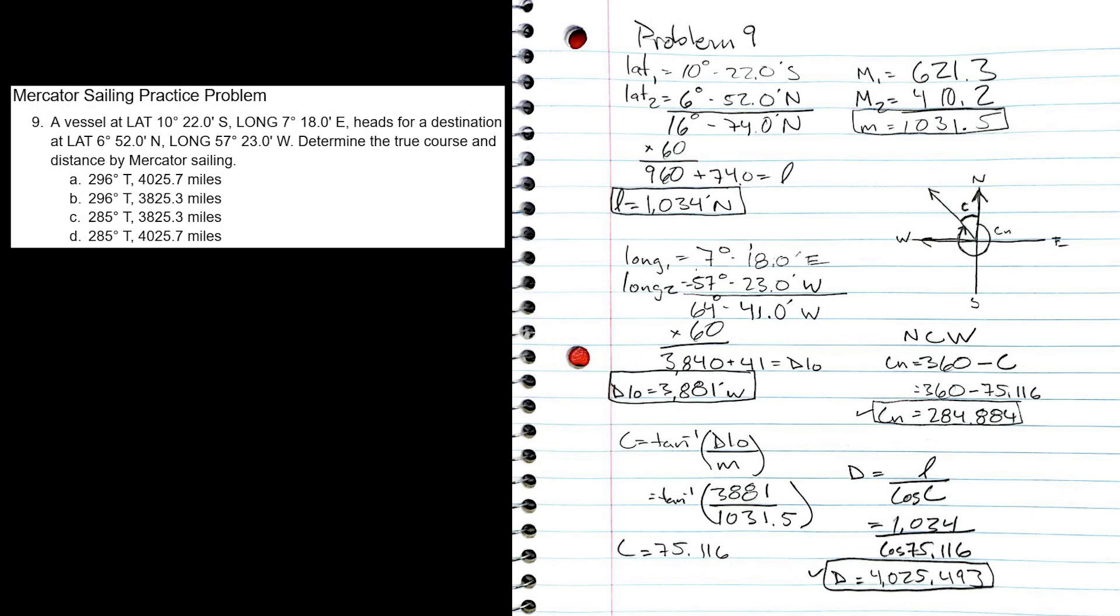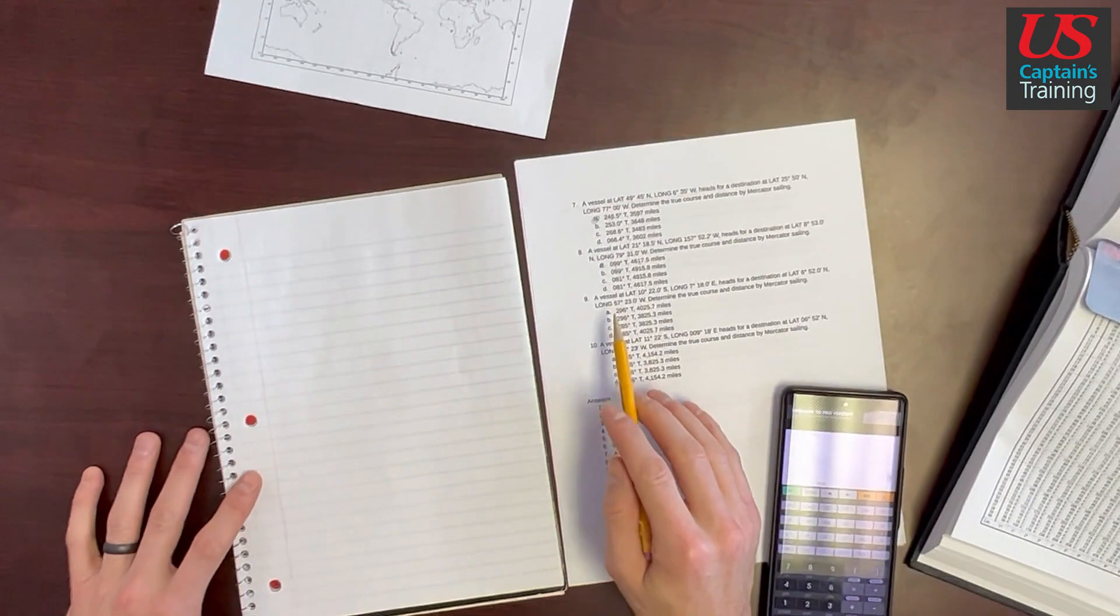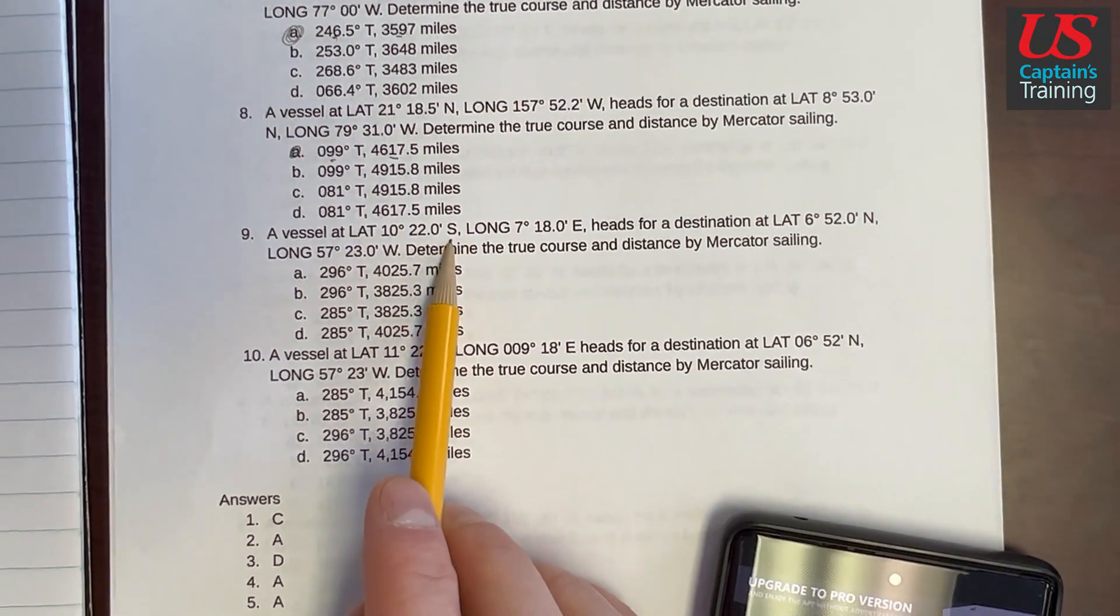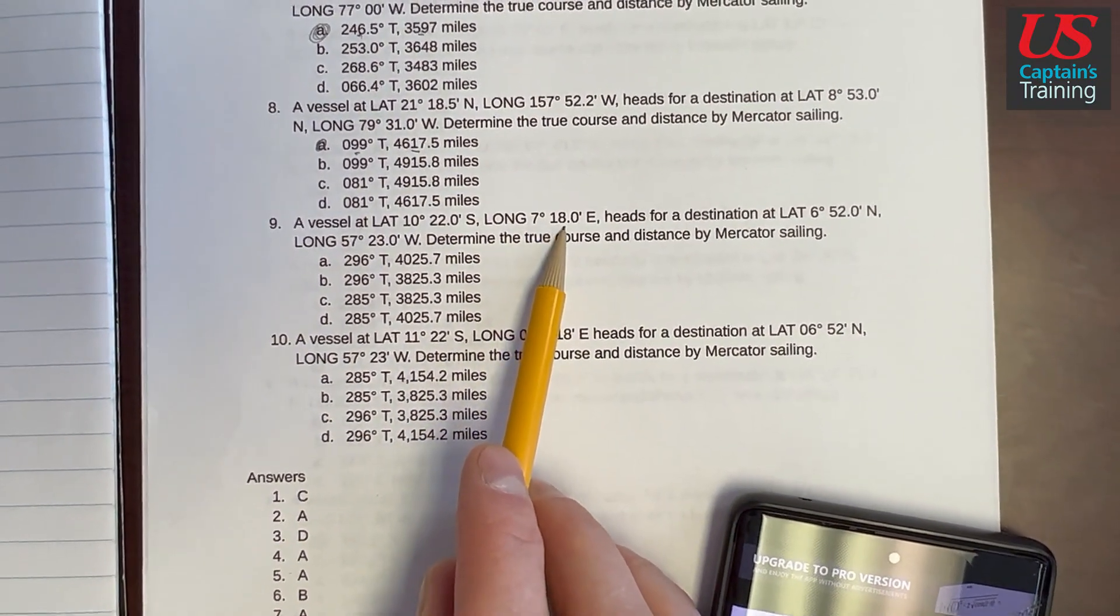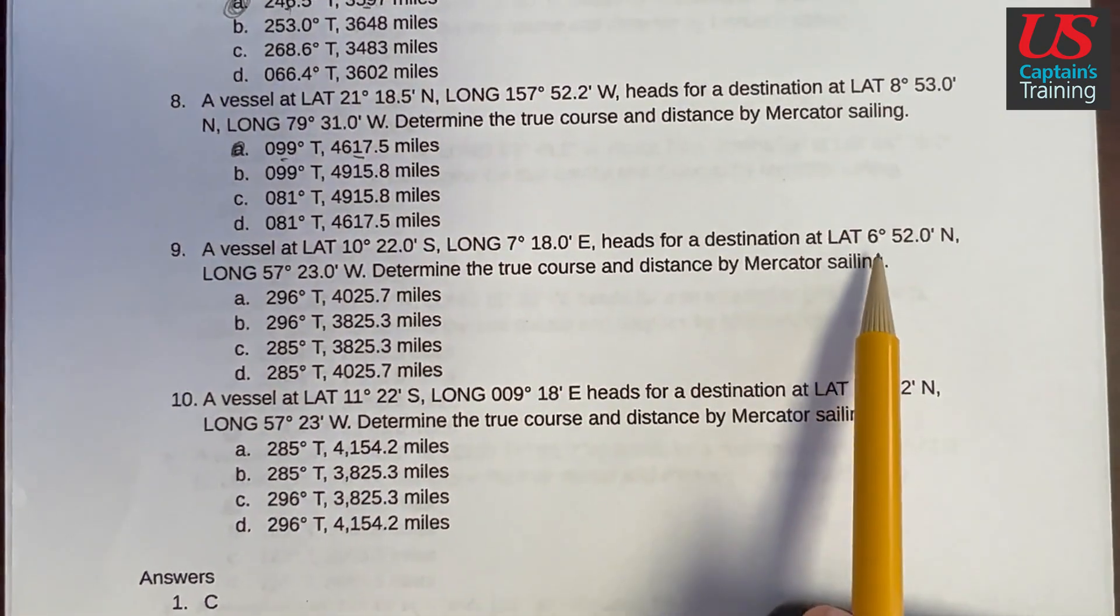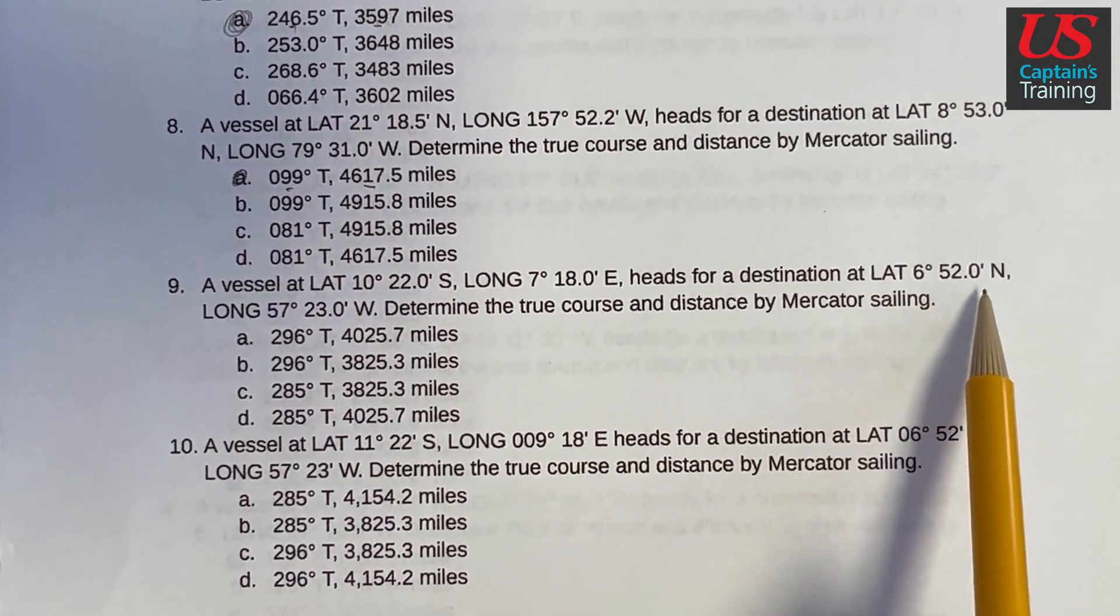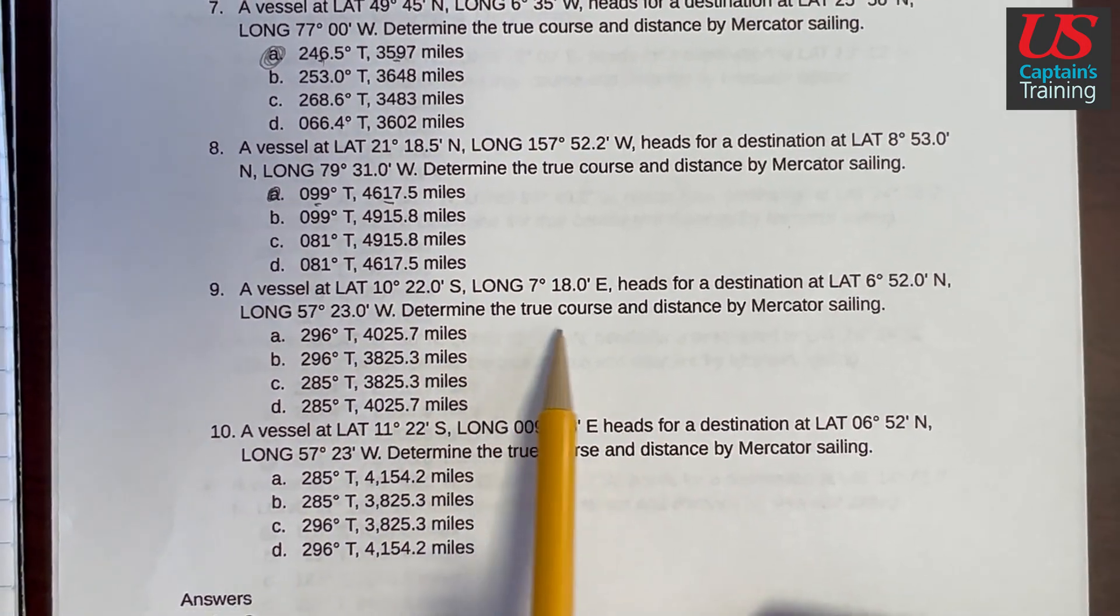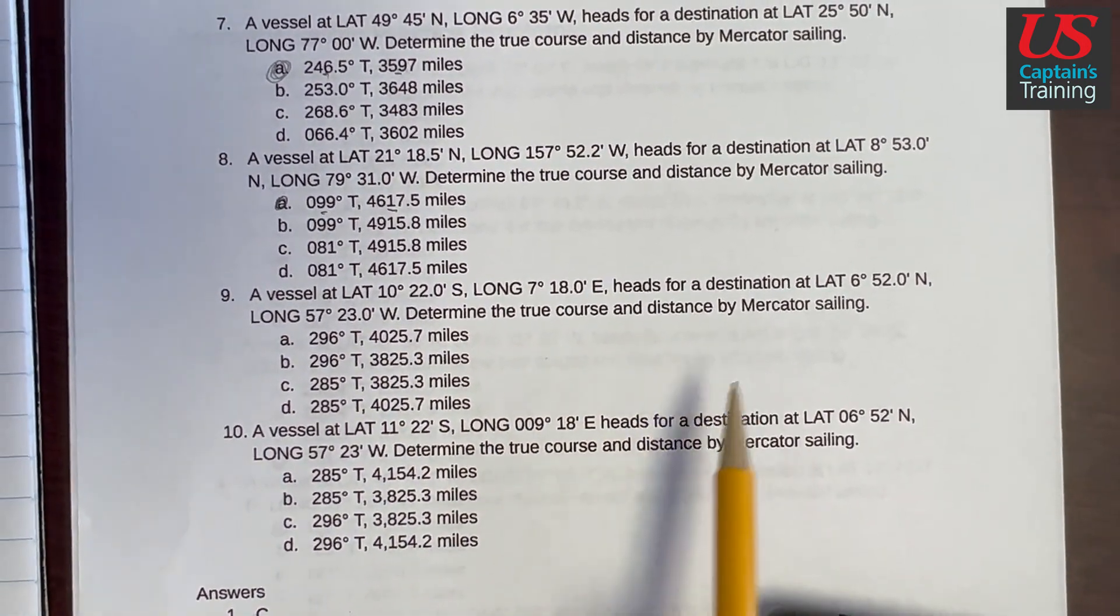Hey, Neil Smith here. In this video, we use Mercator Sailing to solve for true course and distance to a destination, given the coordinates of the start point and the destination. Come on, let's get this. Mercator Sailing Practice Problem 9. A vessel at latitude 10 degrees 22.0 minutes south, longitude 7 degrees 18.0 minutes east, heads for a destination at latitude 6 degrees 52.0 minutes north, longitude 57 degrees 23.0 minutes west. Determine the true course and the distance by Mercator Sailing.